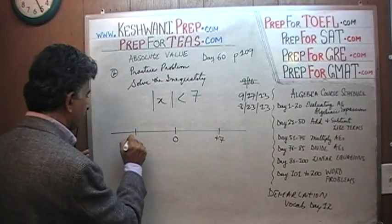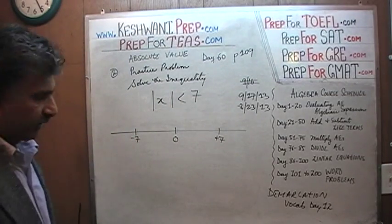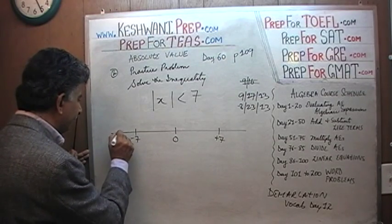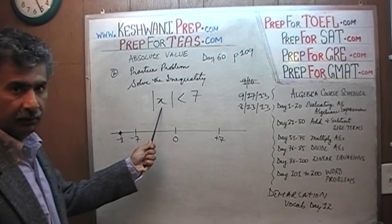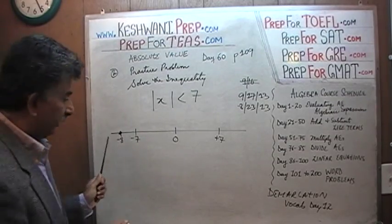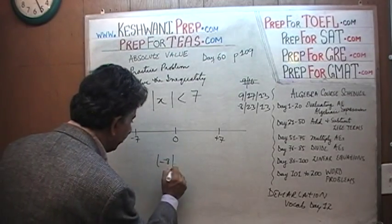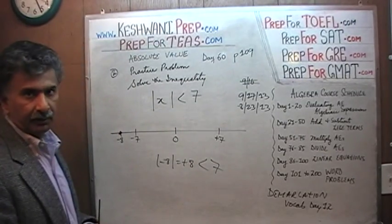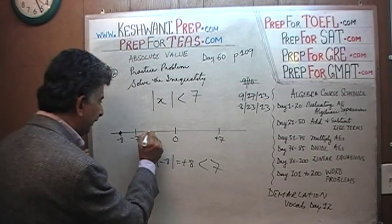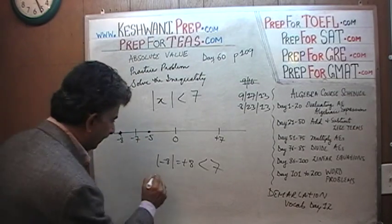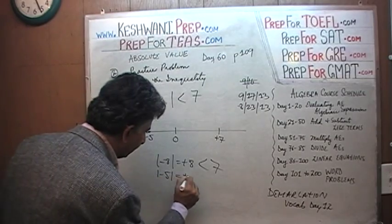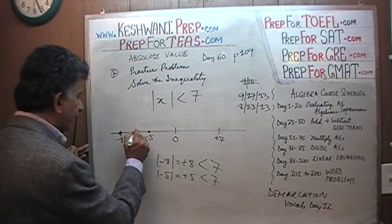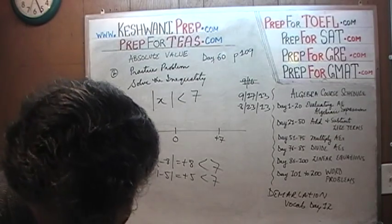Can x be negative 8? Ask yourself — can x be negative 8? The only way to find out is to put it in. The absolute value of −8 is positive 8, and positive 8 is not less than 7, so no. Can x be negative 5? Yes — the absolute value of −5 is positive 5, and positive 5 is less than 7. So x can be any value in this range.